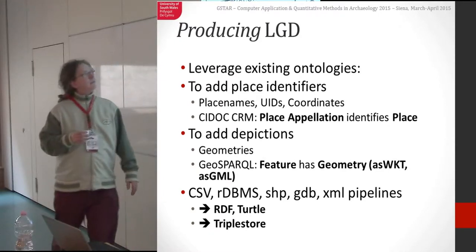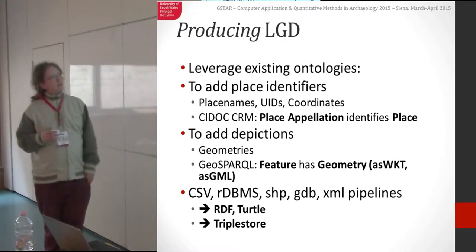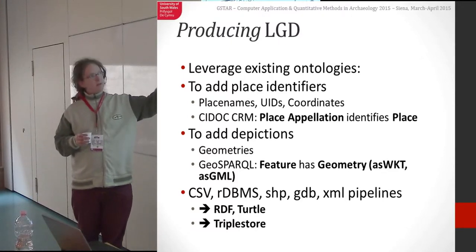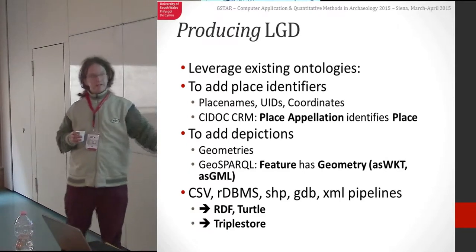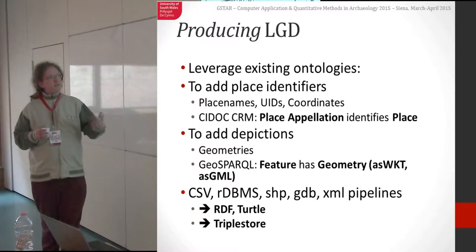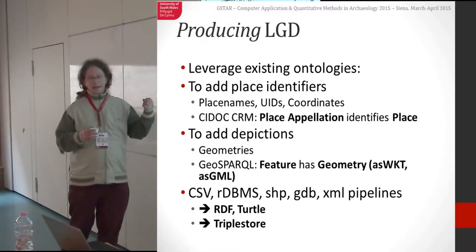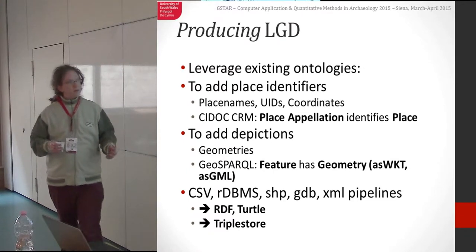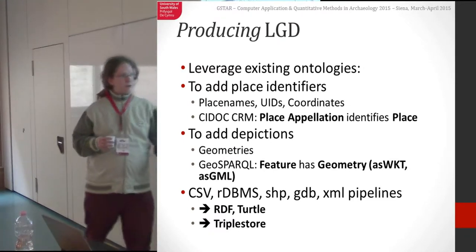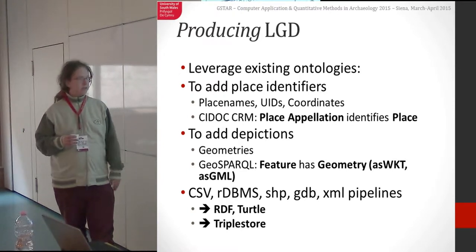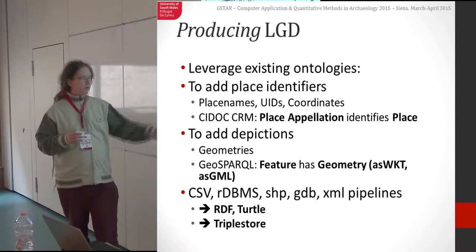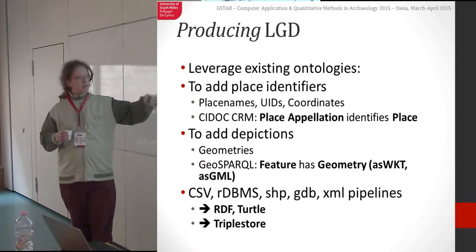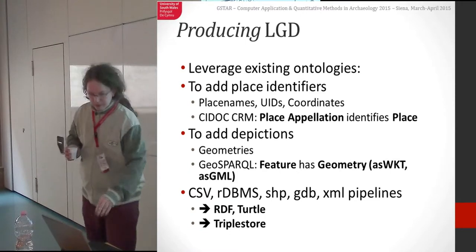So producing the stuff — at a simple level, we can add place identifiers: place names, coordinates, that kind of thing. In CIDOC CRM terms, these are all place appellations, used to identify a place. At a more advanced level, we can start to add depictions of these places — we can say that a particular site is depicted by a polygon. In geospatial language, a feature has some geometry, and we express that geometry in one of a number of ways. What I've been working on is building some pipelines to get data out of systems into an environment where I can start making it interoperable.